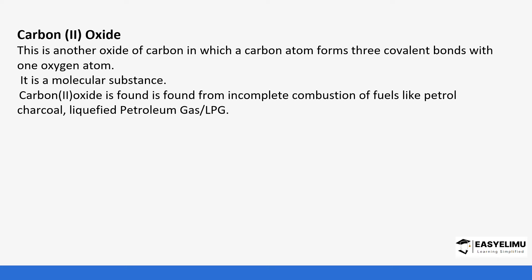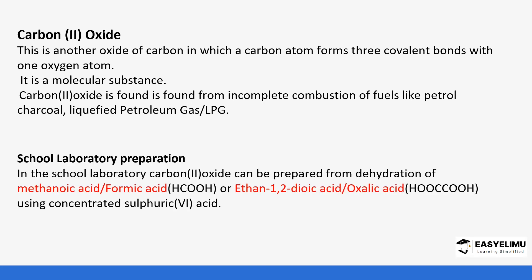Burning fossil fuels like petrol incompletely gives you carbon monoxide. So in the laboratory we can produce carbon monoxide by dehydrating — and note the word dehydrating — methanoic acid, which is also known as formic acid, or ethan-1,2-dioic acid, also known as oxalic acid, using concentrated sulfuric acid. The concentrated sulfuric acid acts as the dehydrating agent.